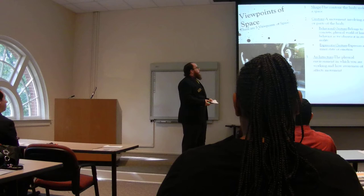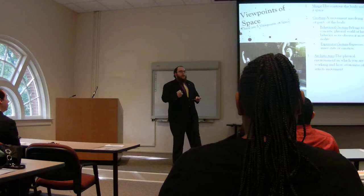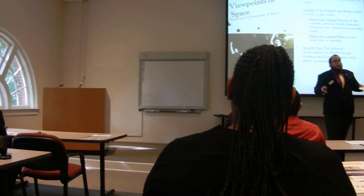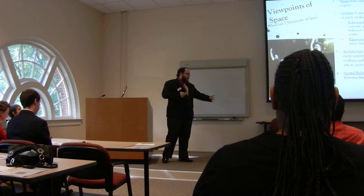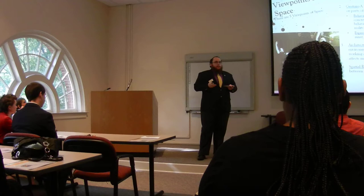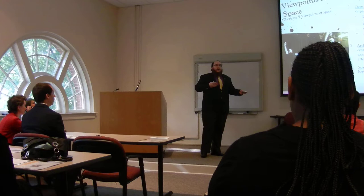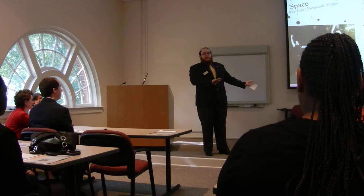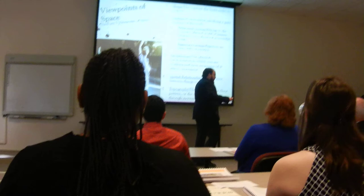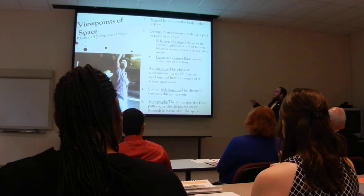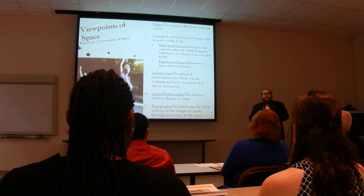Next, we have architecture — the physical environment in which you are working and how awareness of it affects your movement. You need to be aware of how the stage is set up and whether you can engage all the different parts of the stage. That also leads into spatial relationship — the distance between two things on the stage, whether another object or another human being. During one workshop, we did a spatial relationship exercise where I got as close to somebody as humanly possible and they would get as far away as possible, and we would develop a story using that spatial relationship. Finally, we have topography — the landscape or floor in which we create movements in the space — which you engage along with the architecture to invoke a character reaction in the piece.